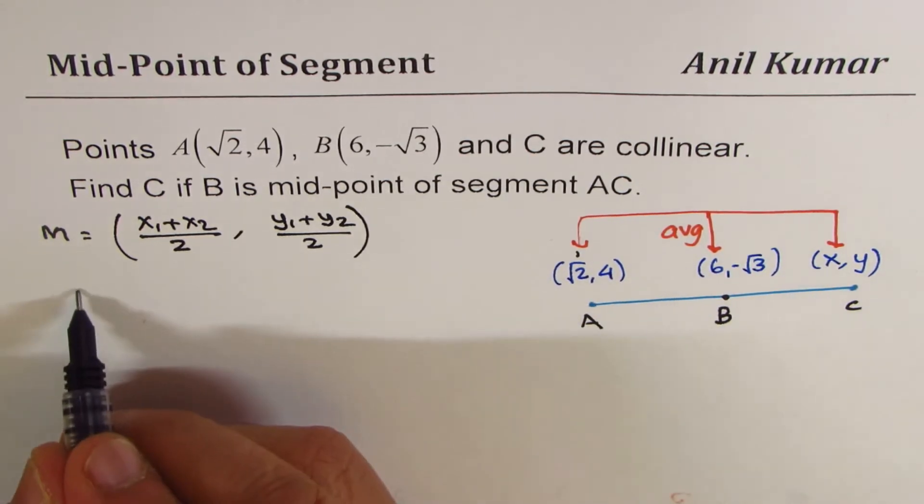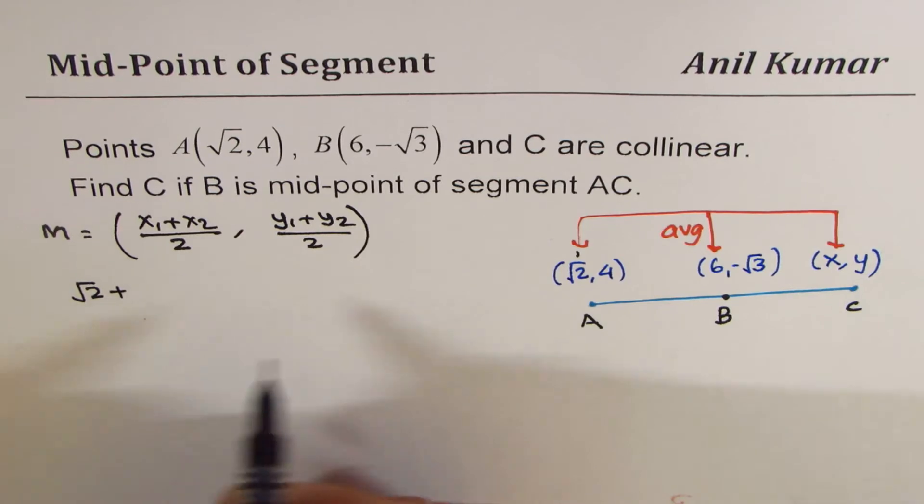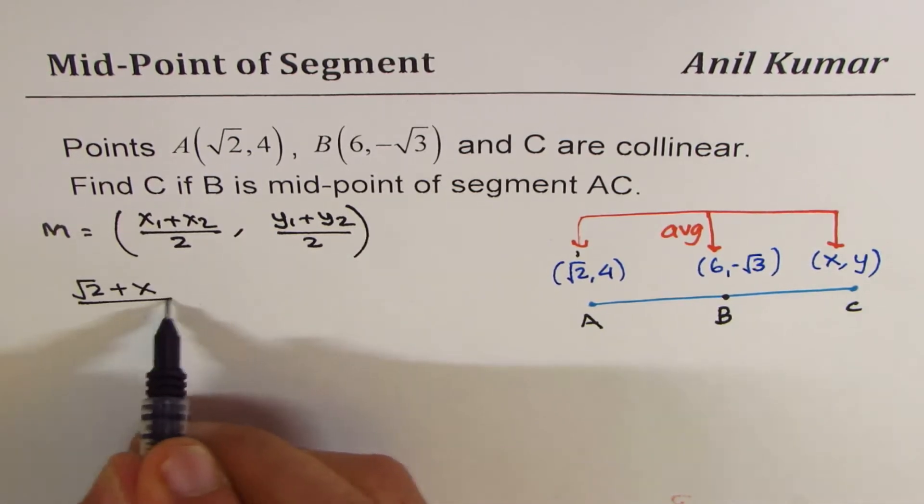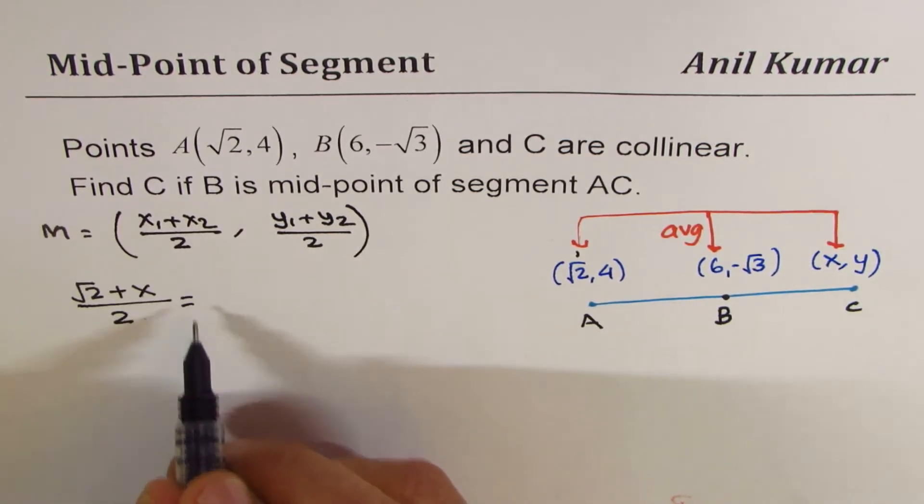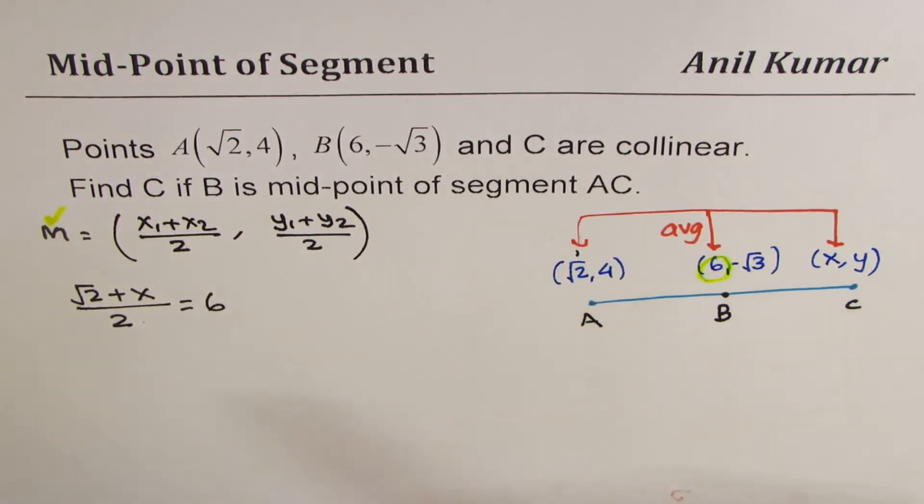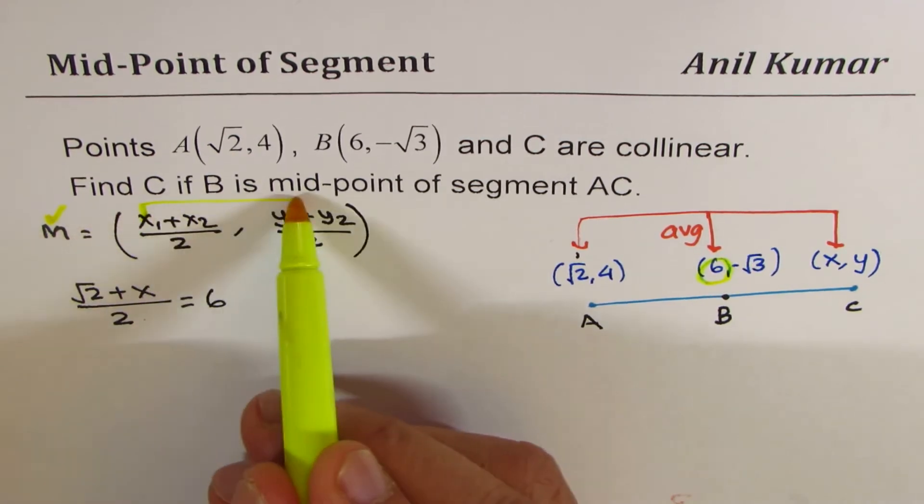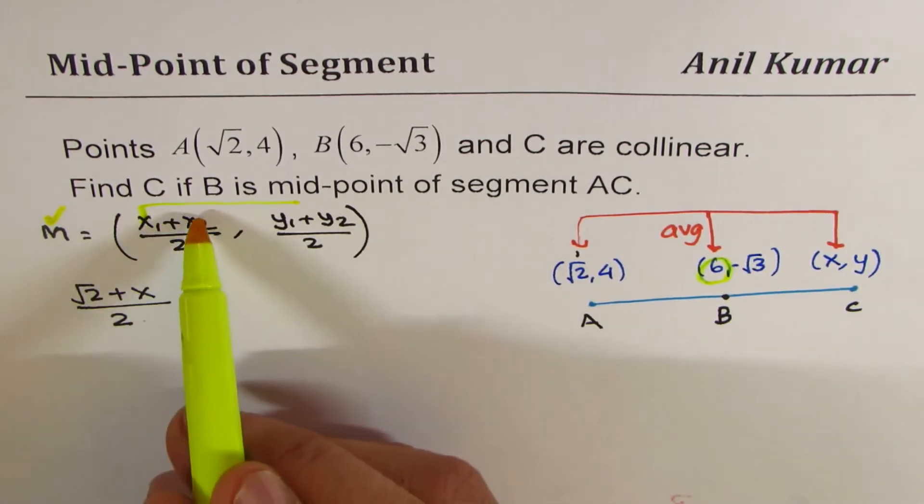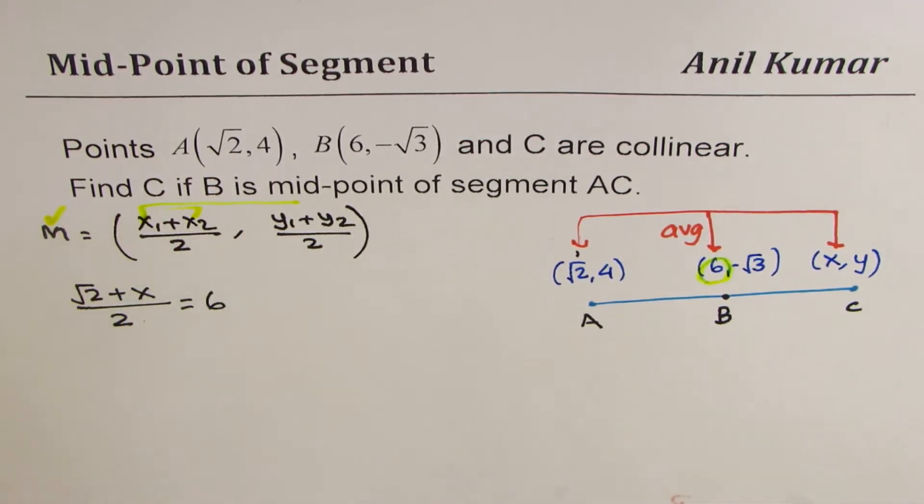So we can say (√2 + x)/2 = 6. What I did was use the midpoint value 6, and these x₁ and x₂ values to get the x value. Similarly, I am going to solve for y also.